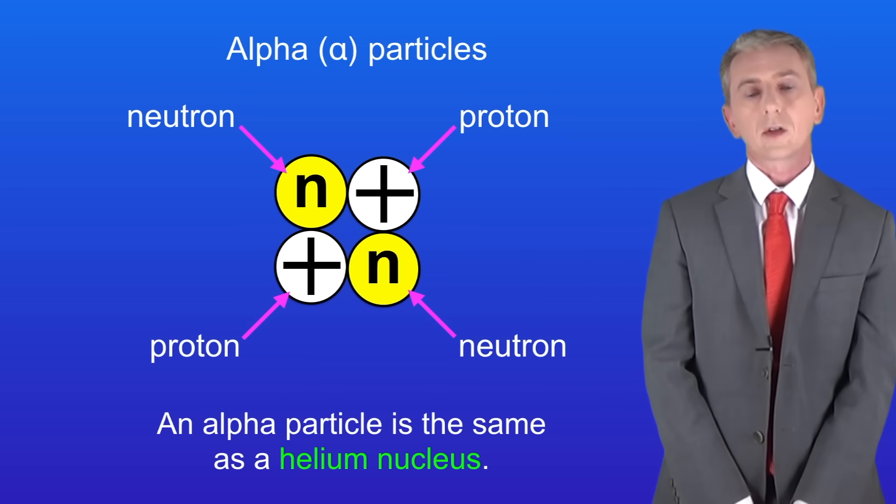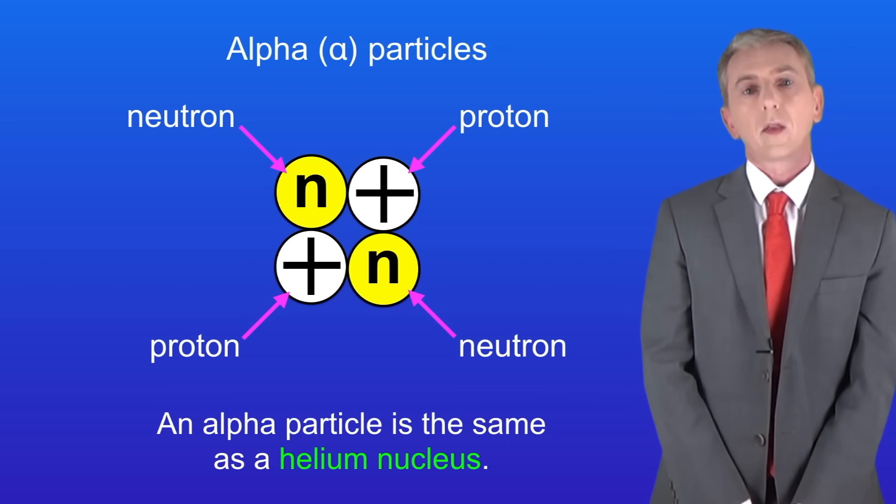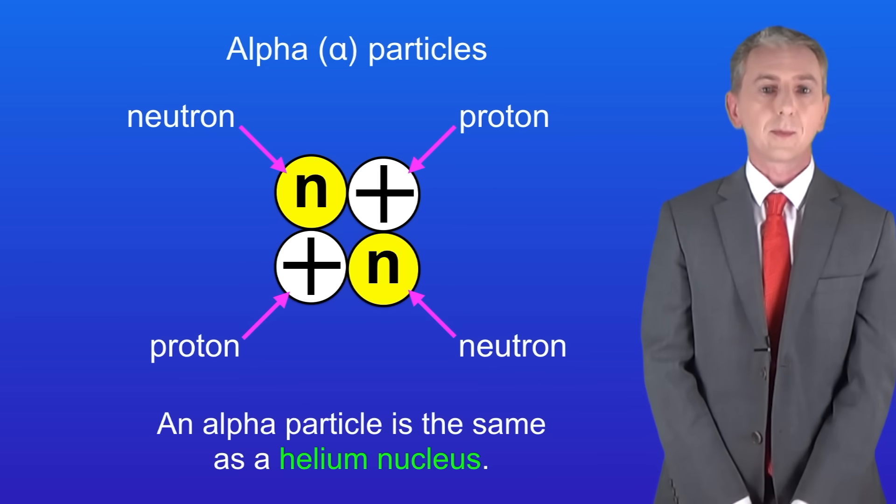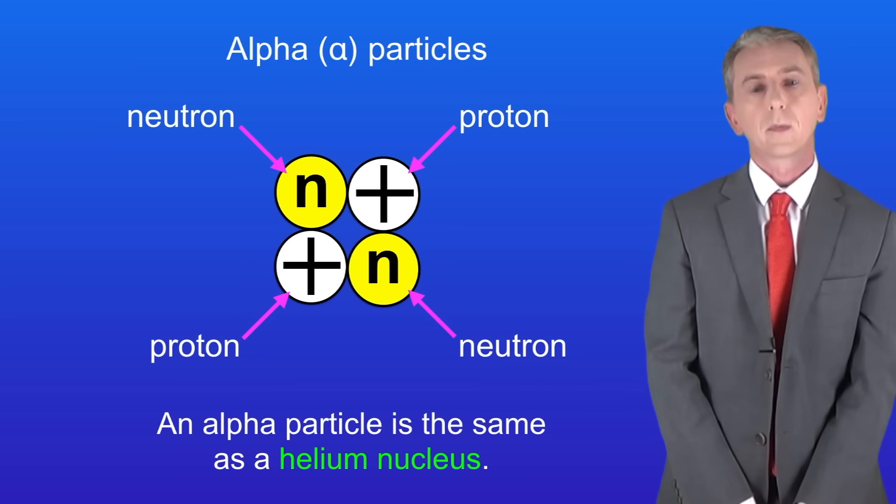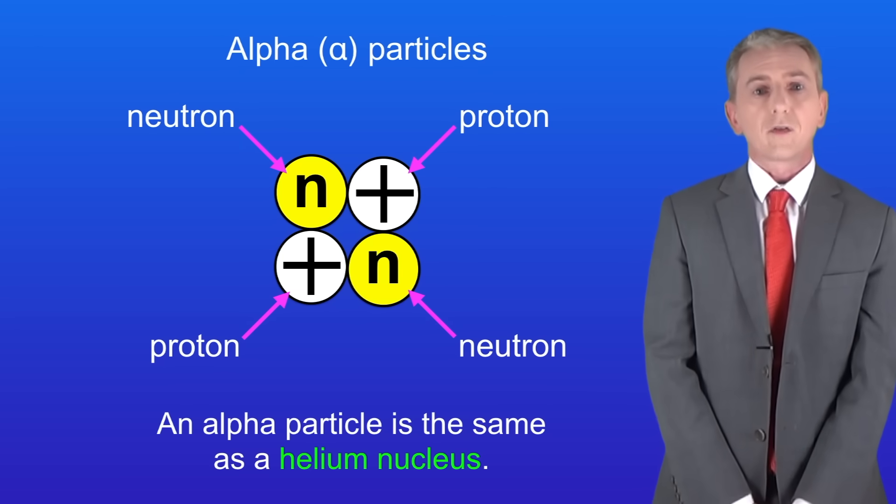The first kind of radiation is called an alpha particle. We saw this before when we looked at the alpha scattering experiment. Alpha particles consist of two protons and two neutrons. That means that an alpha particle is the same as the nucleus of a helium atom. You don't need to get too bogged down by that idea but you do need to remember it for your exam.